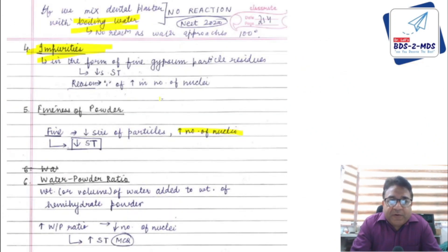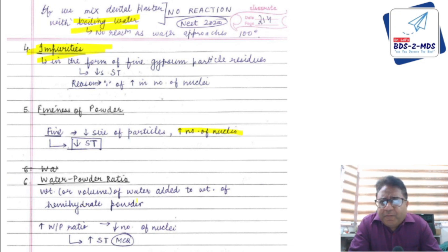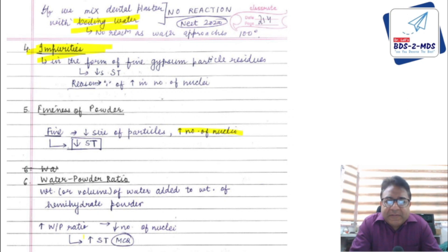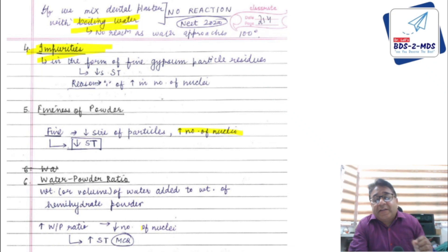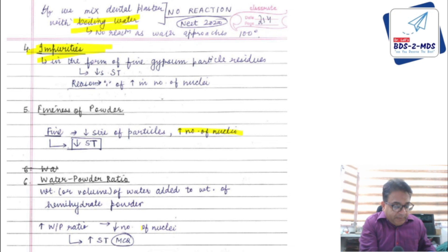Water-powder ratio: adding more water increases the water-powder ratio, which decreases the nuclei of crystallization. Fewer nuclei of crystallization means an increase in setting time.